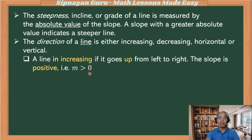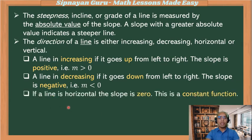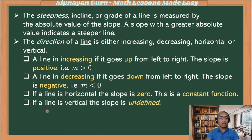A line is decreasing if it goes down from left to right, and the slope of this line is negative. If a line is horizontal, the slope is zero — this is called a constant function. And if a line is vertical, the slope is undefined.